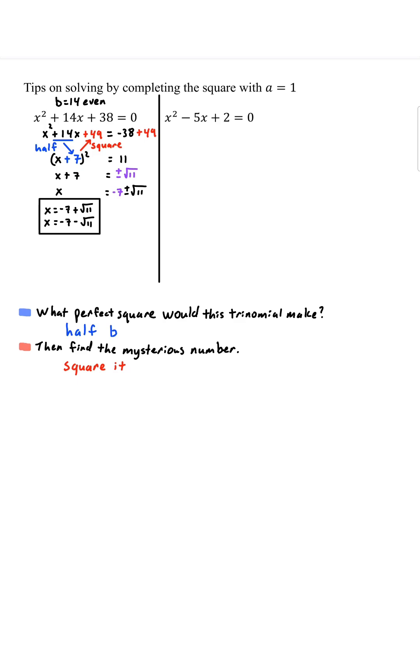Now, what happens if we have x squared minus 5x plus 2 equals 0? This time we notice b is negative 5, which is an odd number. We'll do the same thing. We'll subtract 2 both sides.